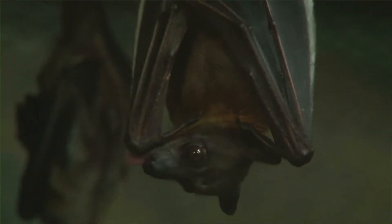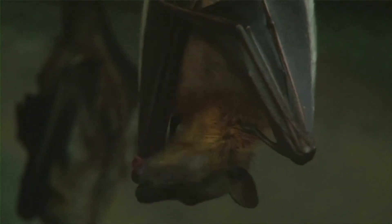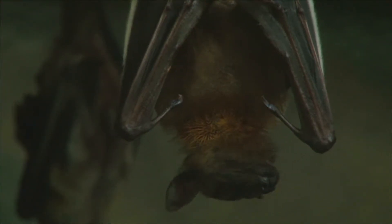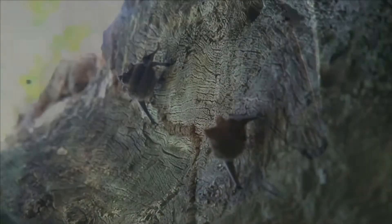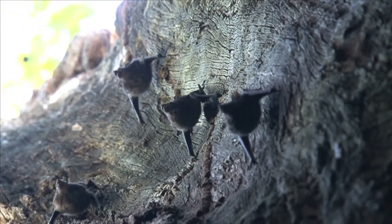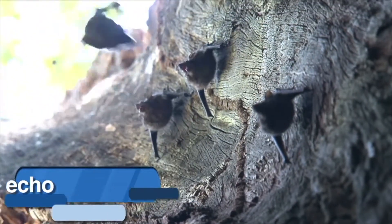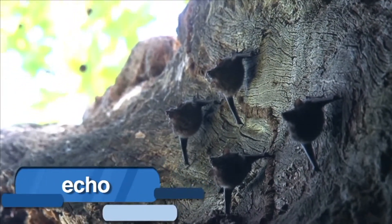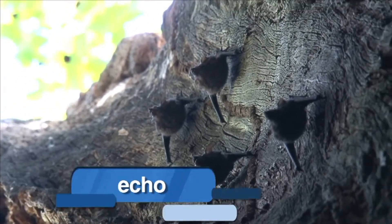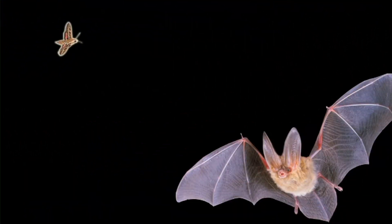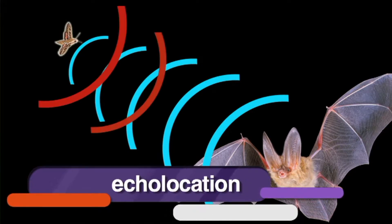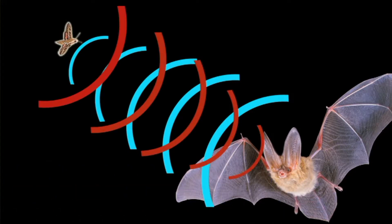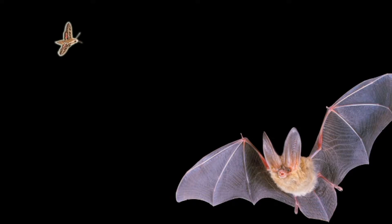Sound and hearing is especially important to bats because it helps them to navigate. Bats don't have great eyesight, so they rely on their hearing to navigate by sending out sounds and listening to the echo. An echo is the sound reflecting or bouncing from an object. The process of using echoes to locate objects is called echolocation. By using echolocation, bats can tell how far away objects are, whether it's fruit, a tree, or another bat.